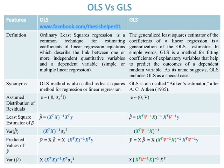The Least Squares estimator of Beta Cap in OLS is: Beta Cap = (X^T X)^(-1) X^T Y. While the Least Squares estimator of Beta Cap in GLS is: Beta Cap = (X^T V^(-1) X)^(-1) X^T Y.